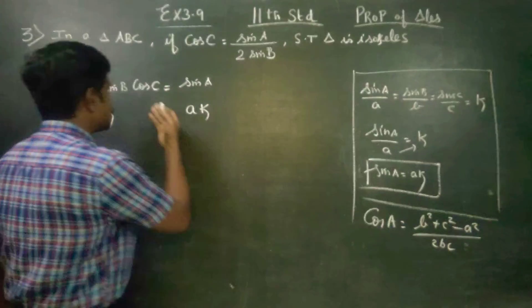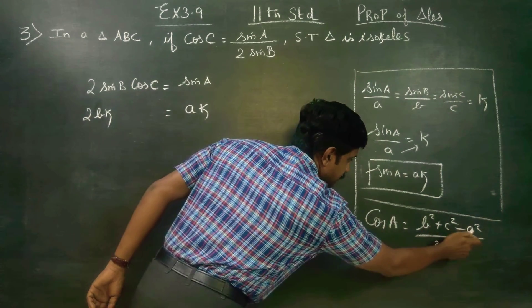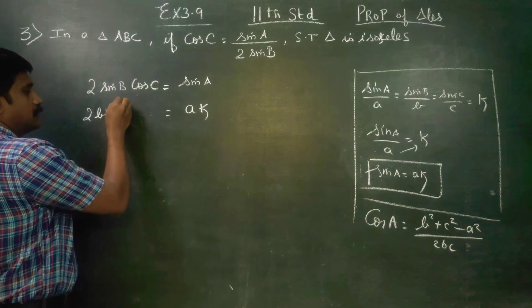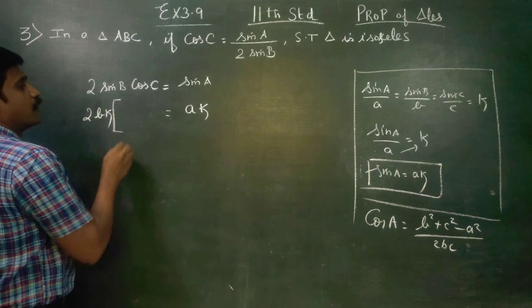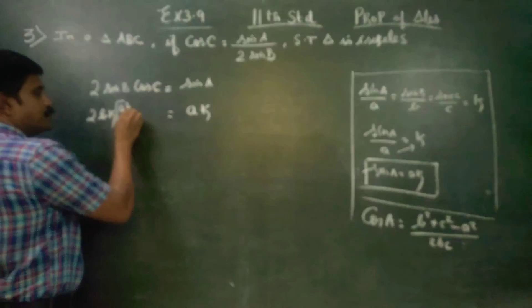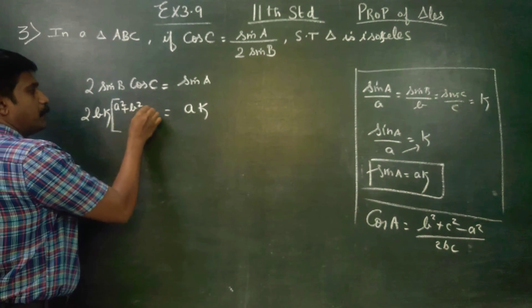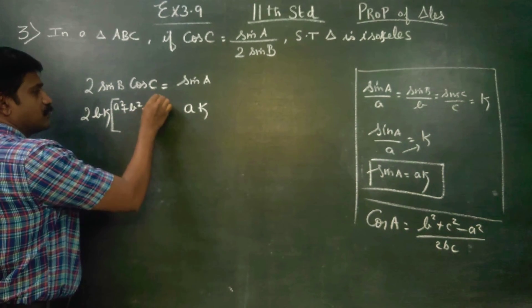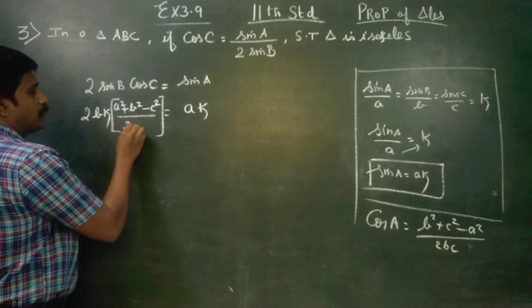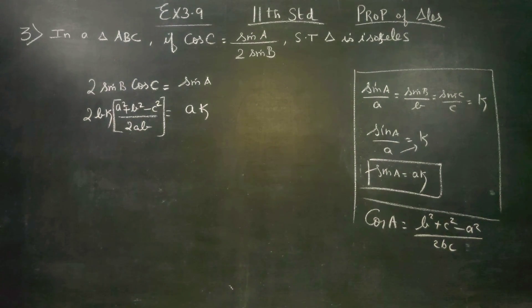Cos C is equal to a squared plus b squared minus c squared by 2ab. This is the formula for the law of cosines.